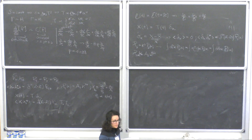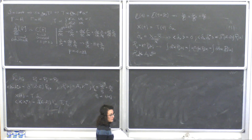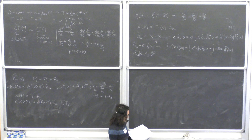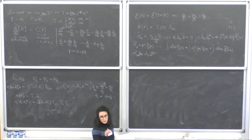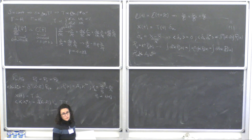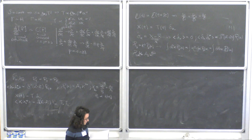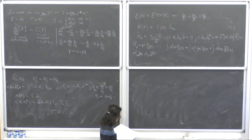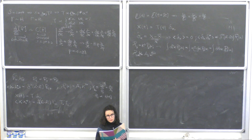Now we have everything we need to derive the perturbed version of the Liouville operator. First, we need to perturb the metric, and then we will insert this perturbed metric into the Liouville operator that we have seen before. In a perturbed universe the distribution function will depend, in general, on all the variables I have listed above. Inserting this perturbed metric into the Liouville operator, we will obtain the perturbed version of the Liouville operator by definition.